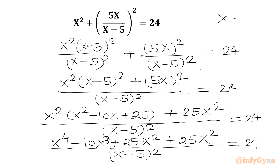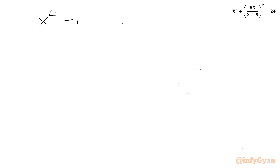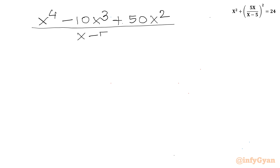Note that x cannot be equal to 5 for real solutions. Now I can combine the numerator terms: 25x² plus 25x² is 50x². So I can write x⁴ minus 10x³ plus 50x², divided by (x - 5)², equals 24.